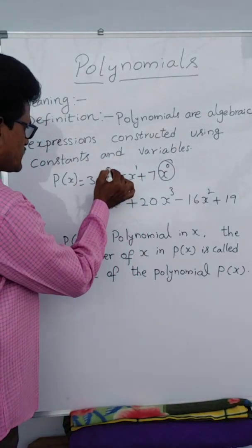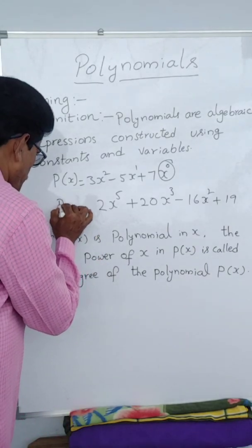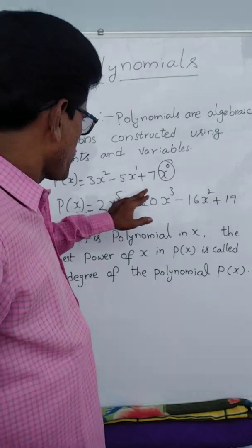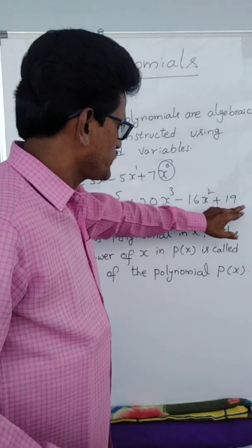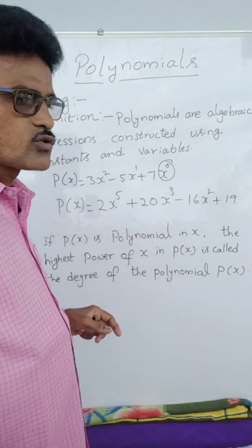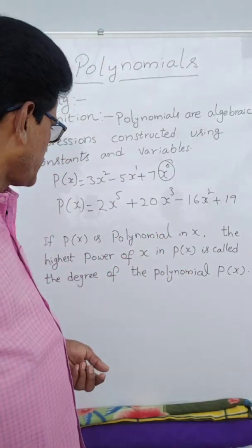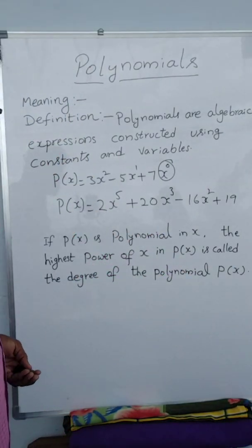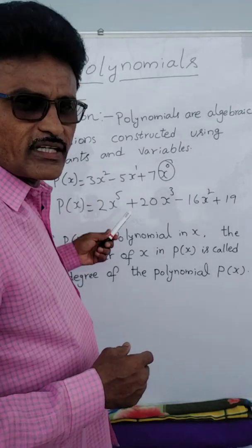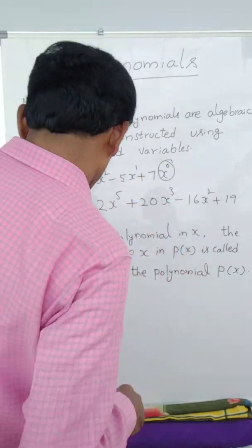So the degree of 3x² - 5x + 7 is 2. Now suppose this is p(x) — here x power is 5, x power is 3, x power is 2, x power is 0. The highest power is 5, so it is a fifth degree polynomial. Depending upon the degree of the polynomial, these are classified into different categories — we will see that.